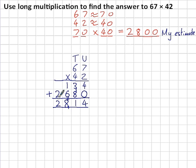So rather than it being 268, which is what you'd get if you multiplied by 4, we're going to have 2,680 because in fact we're multiplying by 40. So the final step was to add those two numbers together and I get 2,814.